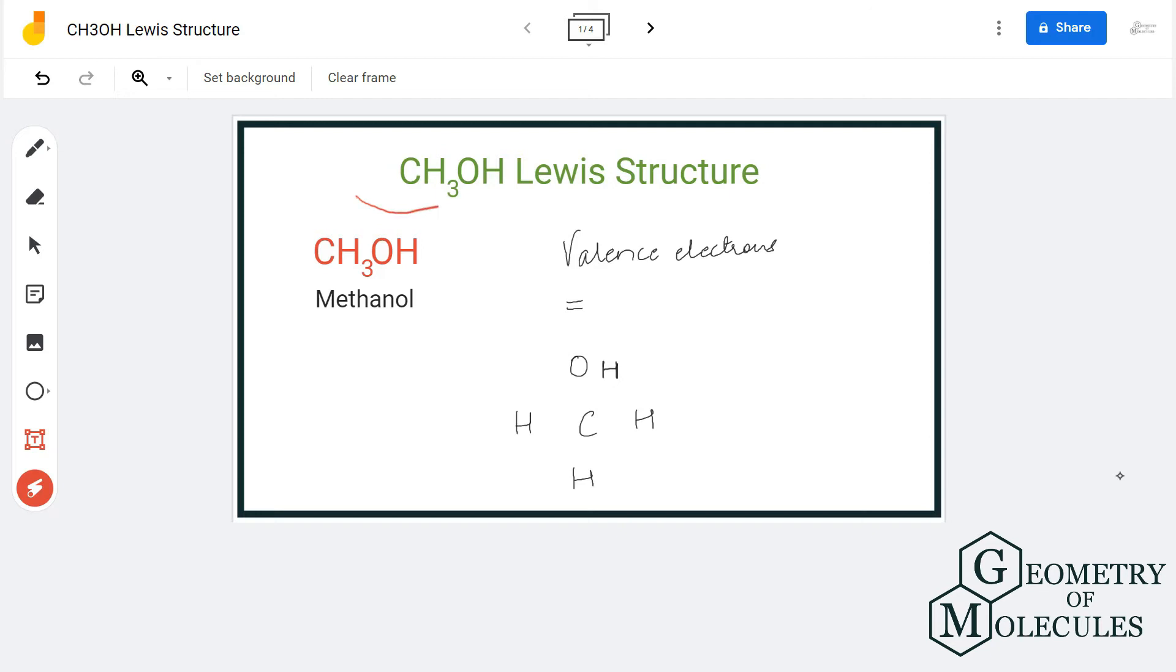Hi guys, in this video we are going to look at the Lewis structure of CH3OH, the chemical formula for methanol. To draw the Lewis structure, we'll first need to know the total number of valence electrons for this molecule.